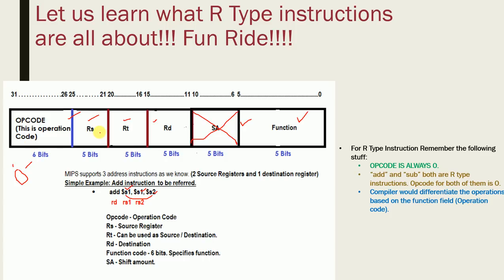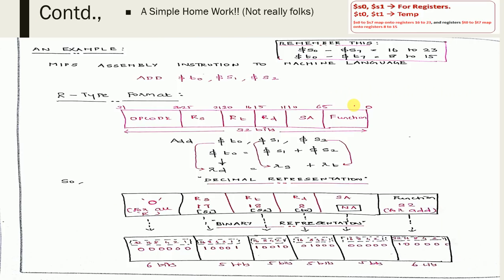In the R-type format: rs is the first source register (s1), rt is the second source register (s2), and rd is the destination register (s1 again). The sa field is not applicable for add or sub. The function field distinguishes the specific operation. The compiler differentiates between instructions based on opcode and function code together — they zero in on whether it's add, sub, or another operation.